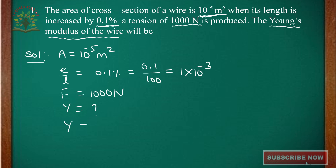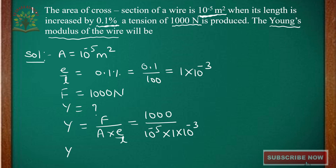The formula for Young's Modulus is Y = (F/A) × (1/(ΔL/L)). Substituting values: F = 1000, A = 10⁻⁵, ΔL/L = 1 × 10⁻³. The powers combine: 10³ from force divided by area gives +5, and 1/10⁻³ gives +3, totaling 10⁸ × 10³ = 10¹¹. Therefore Y = 10¹¹ N/m².